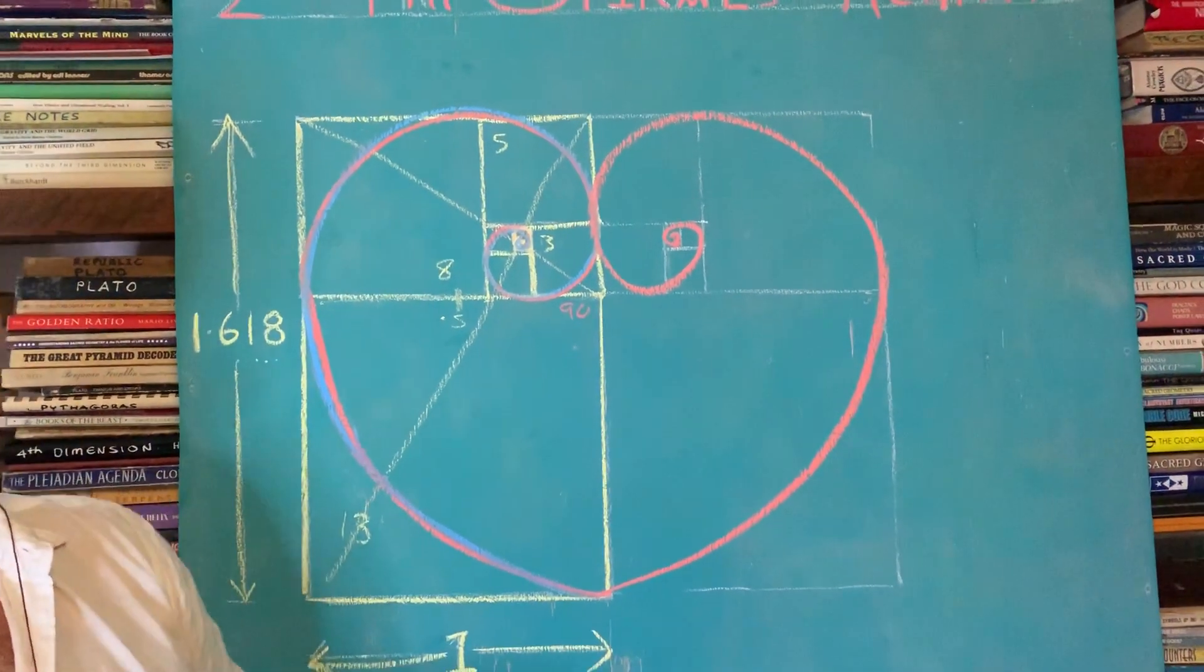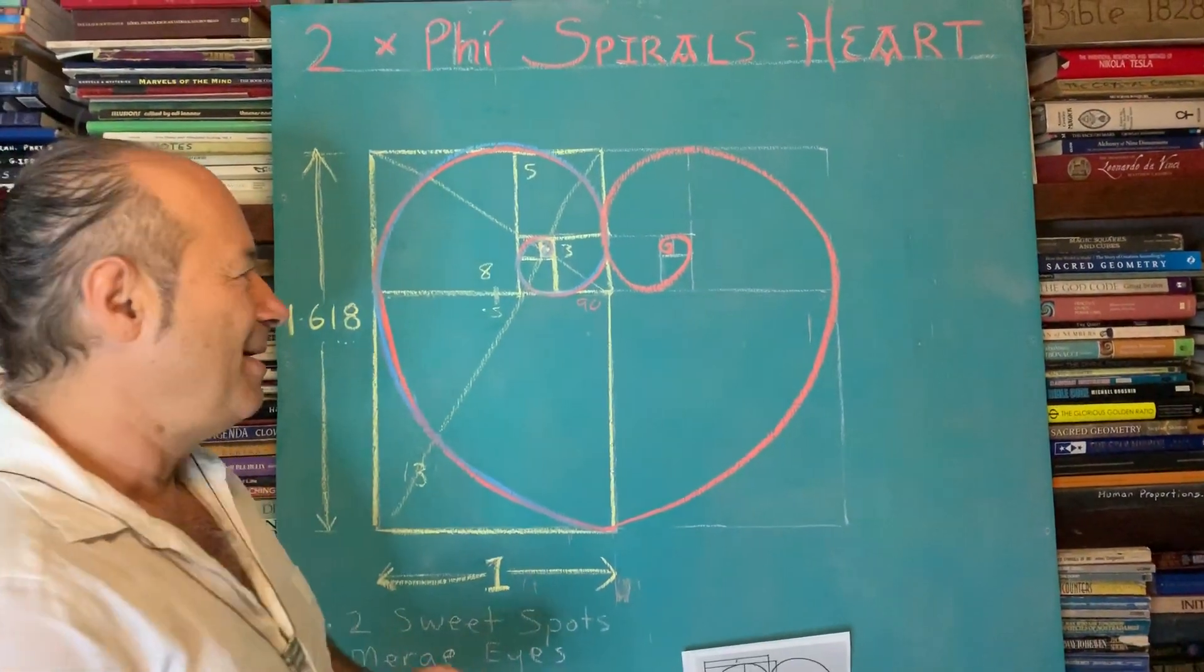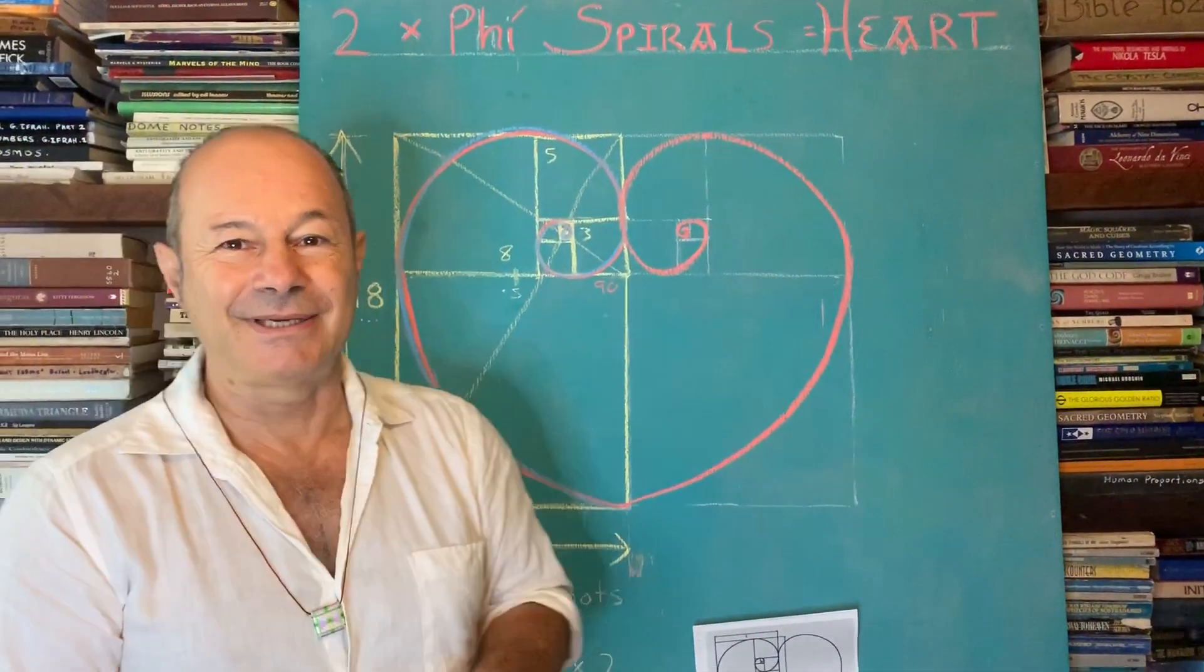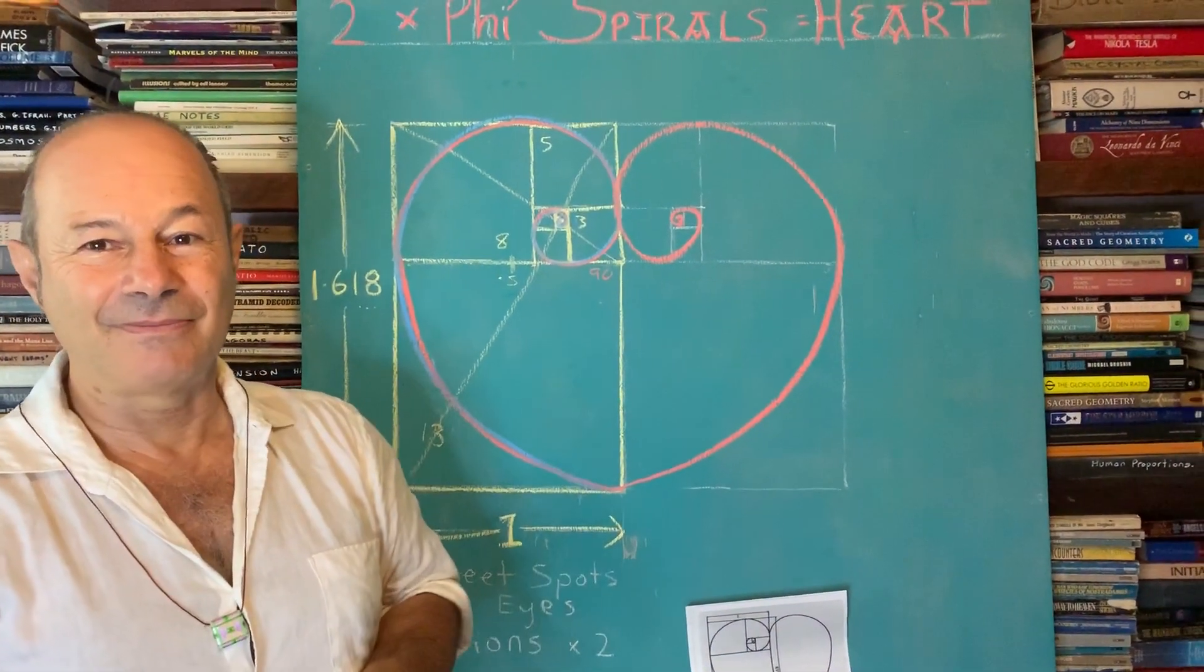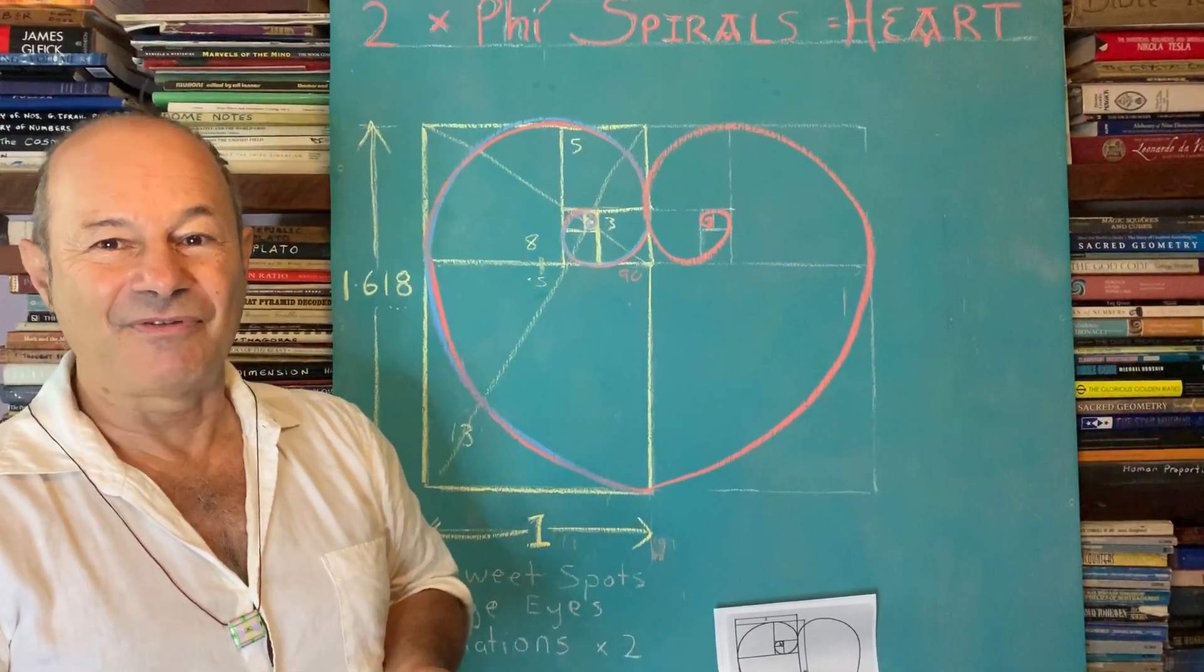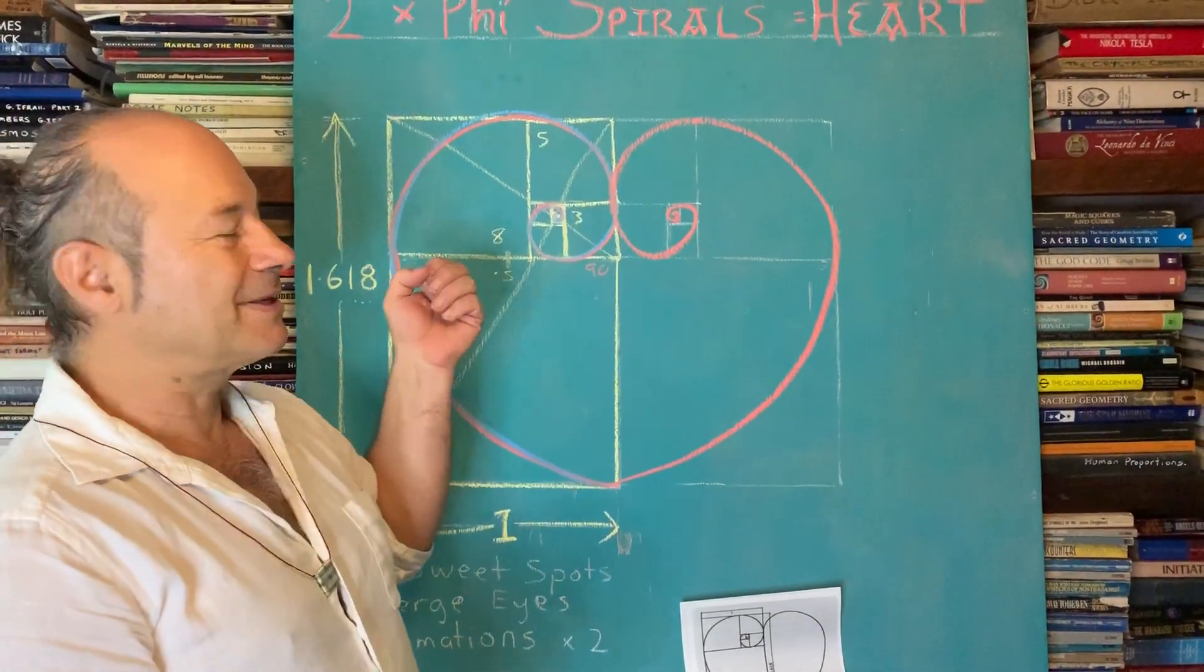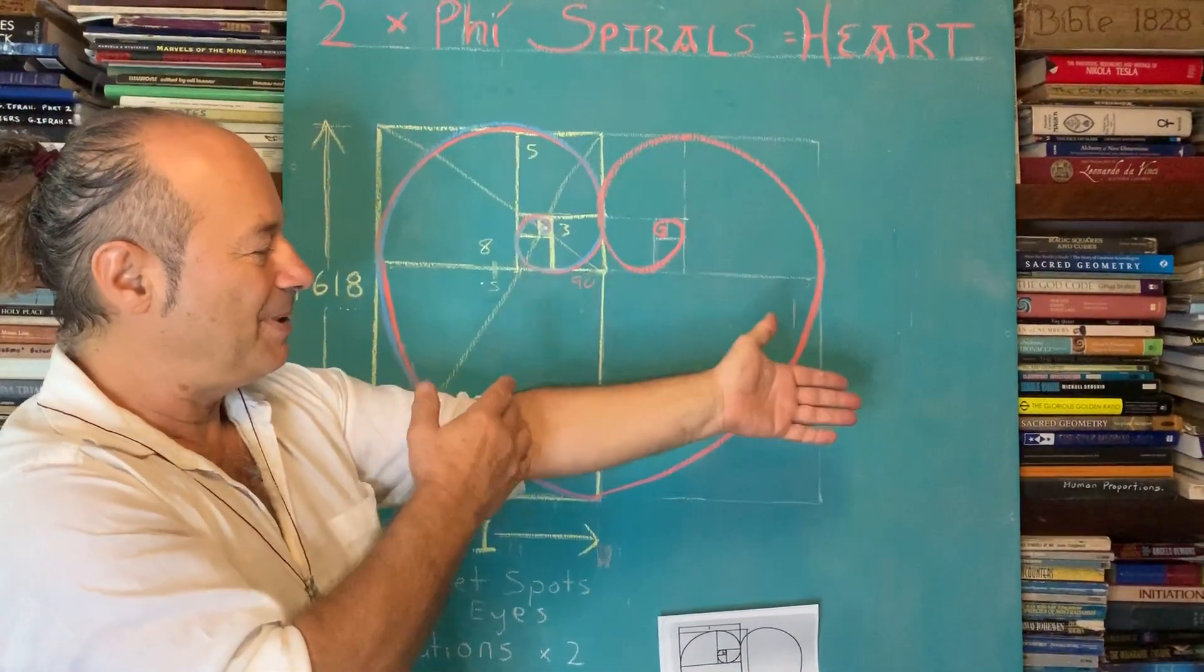We have this beautiful origin of the love heart. Everyone in the world mindlessly does this symbol of the love heart, and here we have the mathematical origin of love, the energy of love based on the harmonics of the Fibonacci sequence, based on the mathematics of flowers.